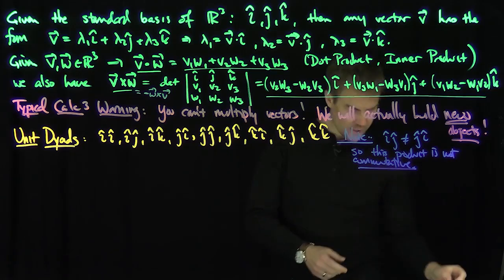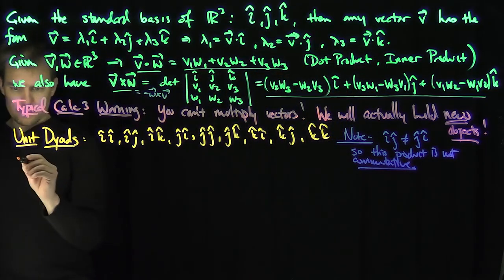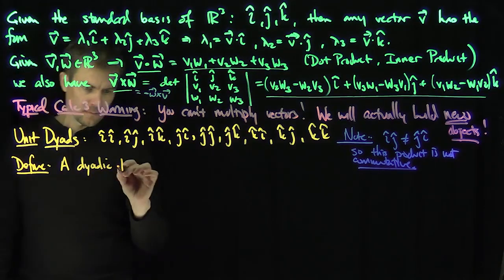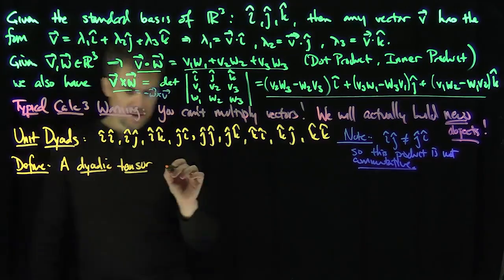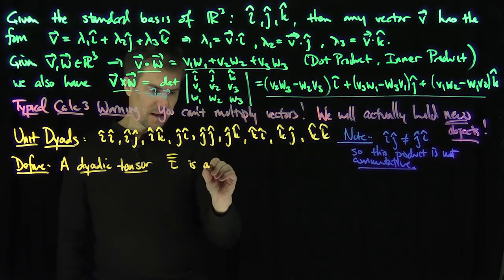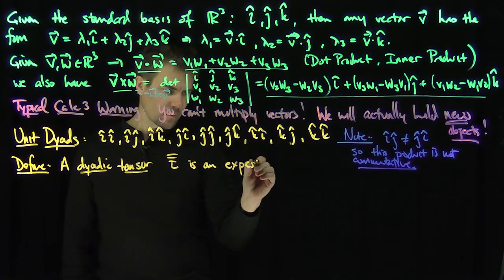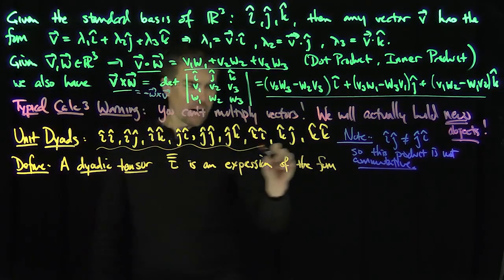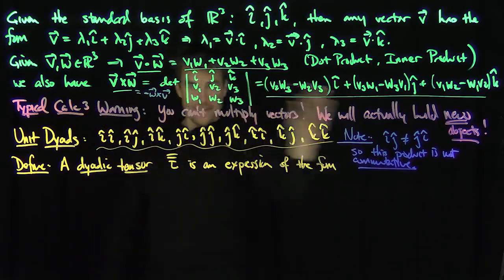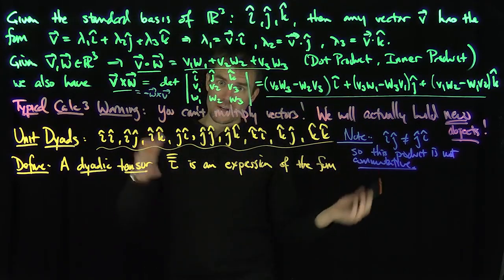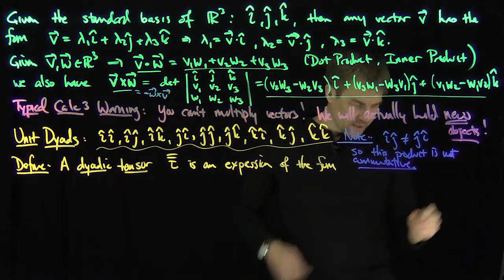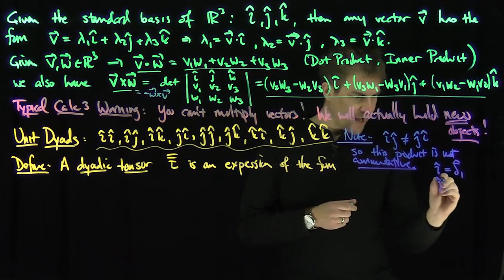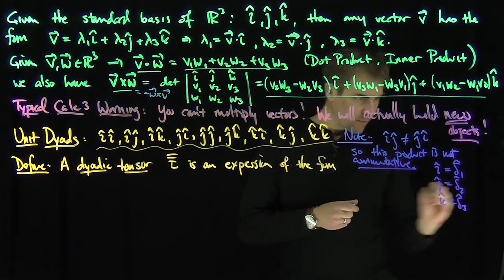And then we'll define a dyadic tensor τ with two bars over tau. It's going to be a linear combination of these nine vectors. So instead of writing nine things out, I'm going to build some notation which is commensurate with our ordinary tensor notation. So this is key: we're going to set i-hat equal to δ₁-hat, j-hat equal to δ₂-hat, and k-hat equal to δ₃-hat.